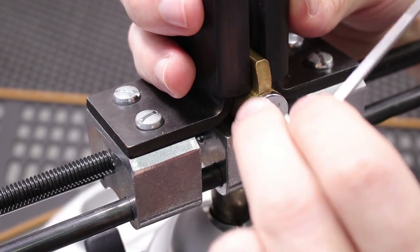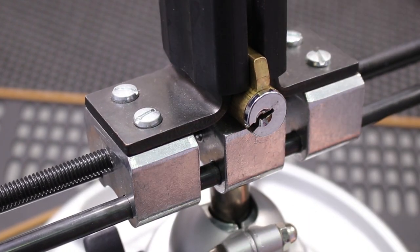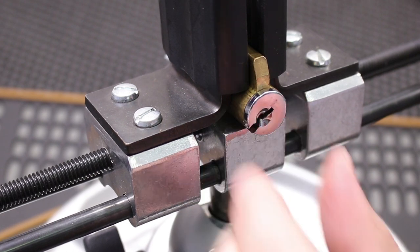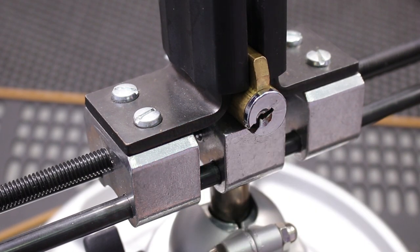Alright so now the lock is open. So what happens if this lock was installed in a way where if I turned it to the clockwise position that is the locked position that is going to lock the door. But I wanted to try to get the door unlocked. So what I'm going to do is I'm going to use a plug spinner.